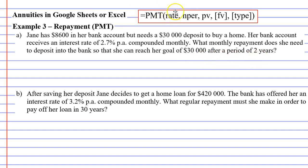We'll start with our interest rate. Our interest rate is 2.7% per annum, but we're compounding this monthly, so we need to divide this by 12. And whenever we calculate a rate, we always divide by 100 so that it converts it to a decimal.